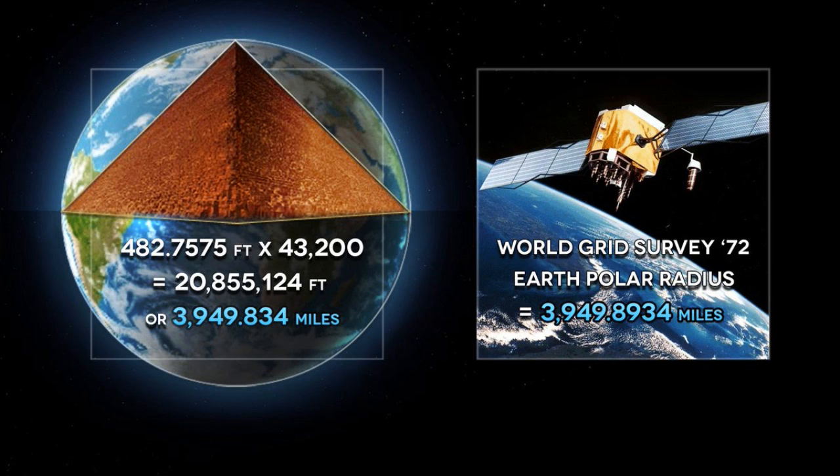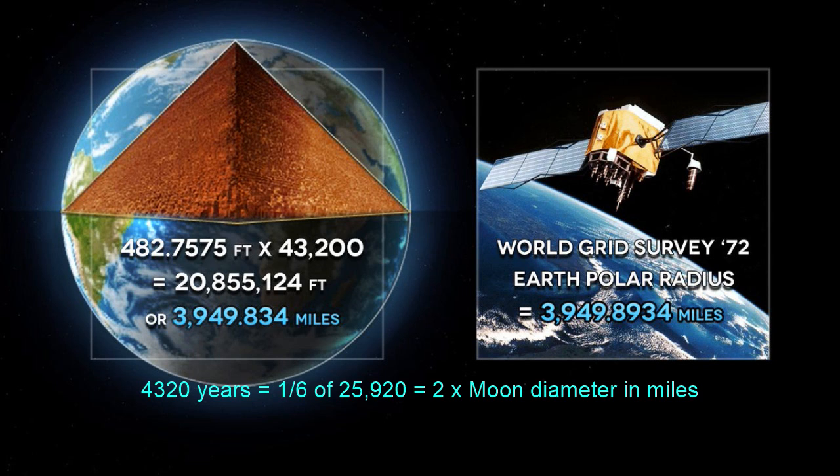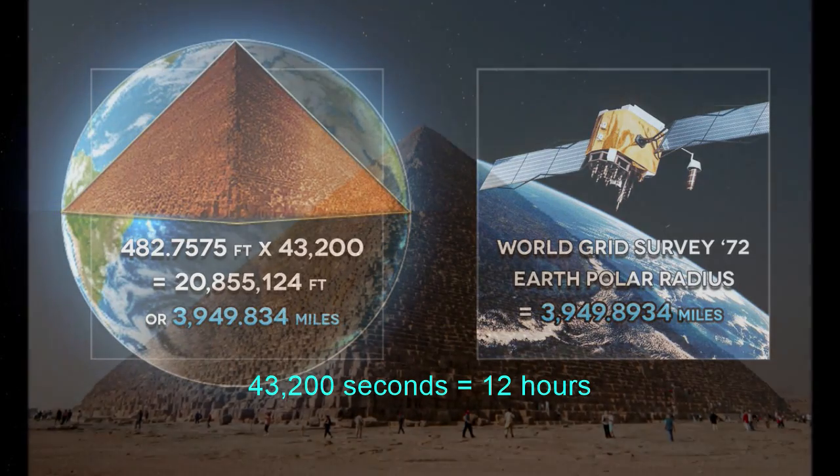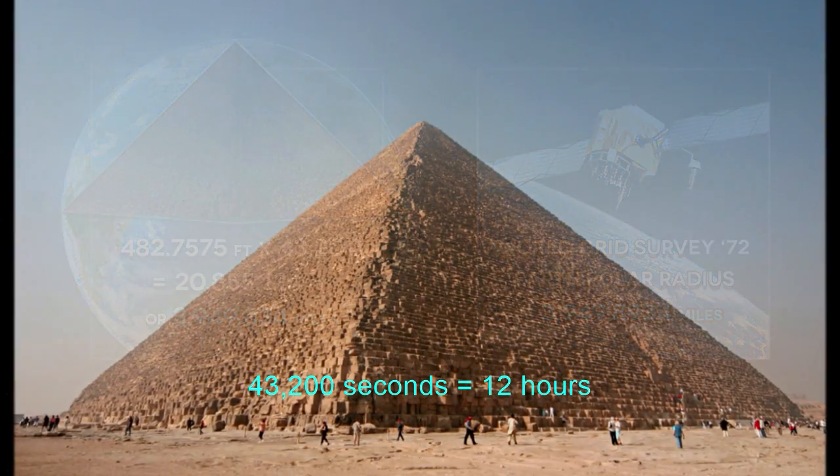Now, 432 and multiples thereof are precessionally significant. 4,320 is the number of years it takes for the Earth's polar axis to precess through two zodiacal constellations, or one sixth of the full precessional cycle, as well as being twice the Moon's diameter in miles.